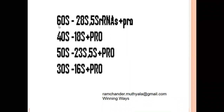In the cytoplasm of the eukaryotic cell, we can identify 28S rRNA, 5S rRNA, and proteins, as well as 18S rRNA and proteins. When translation begins, the 28S rRNA, 5S rRNA, and protein particles assemble to form the 60S large subunit of the eukaryotic ribosomal complex.